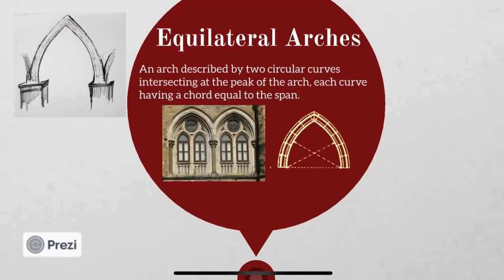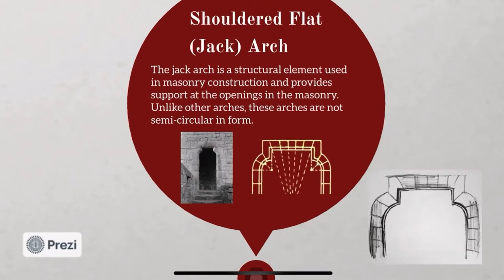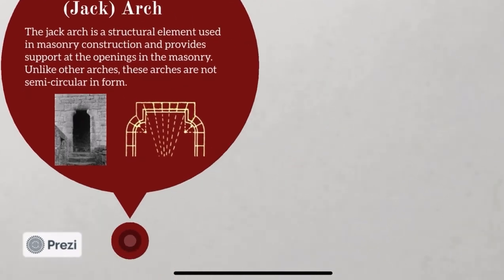And then came the equilateral arch — it is an arch described by two circular curves intersecting at the peak of the arch, each curve having a chord equal to the span. Coming into the shouldered flat arch or jack arch: a jack arch is a structural element used in masonry construction and provides support at the openings in the masonry. These arches look like shoulders and are hence named so.